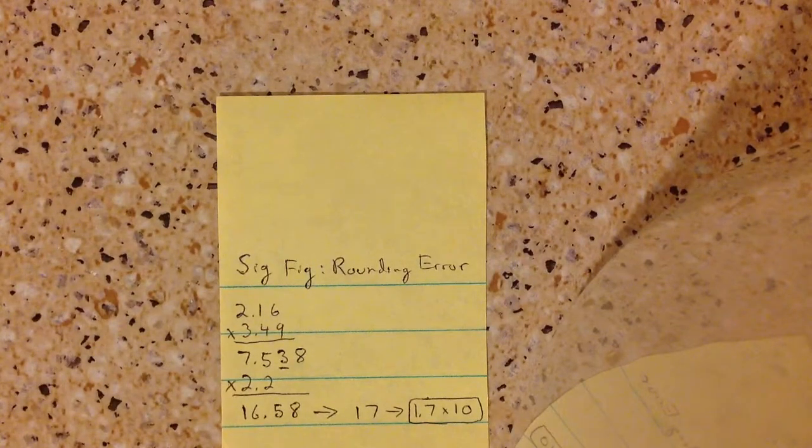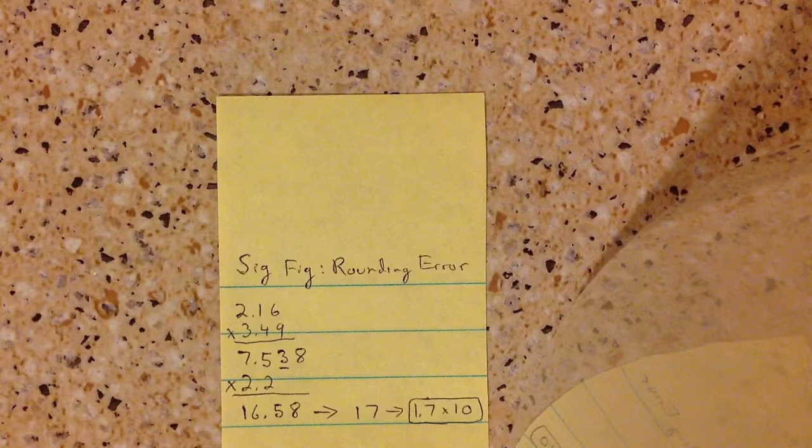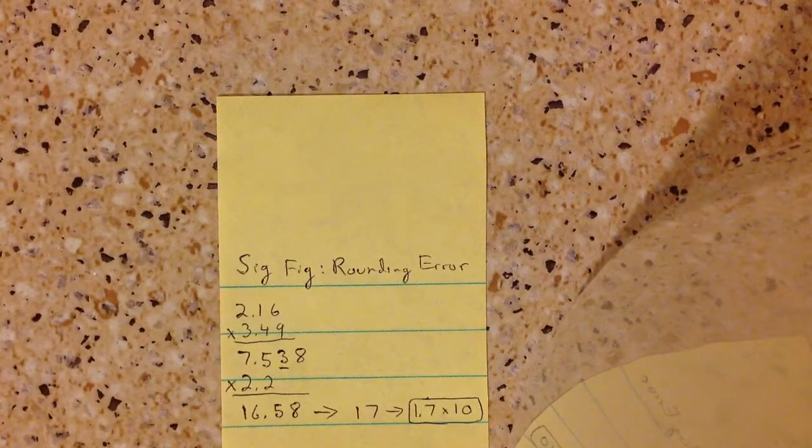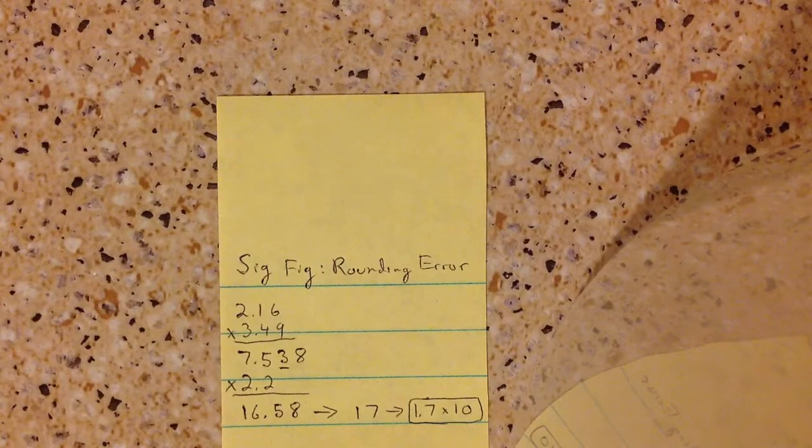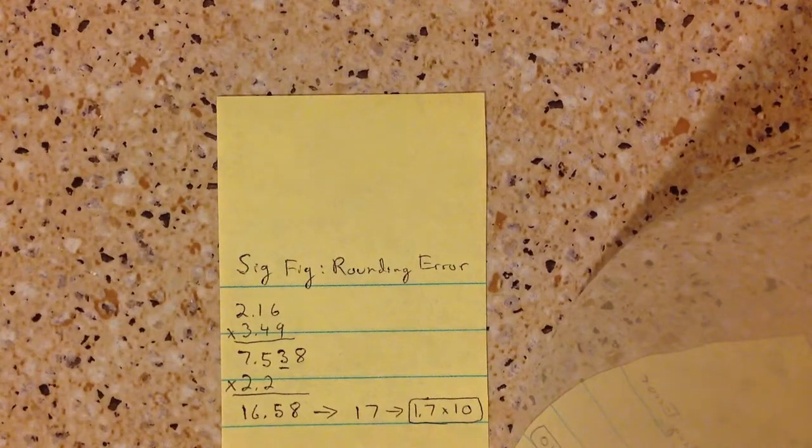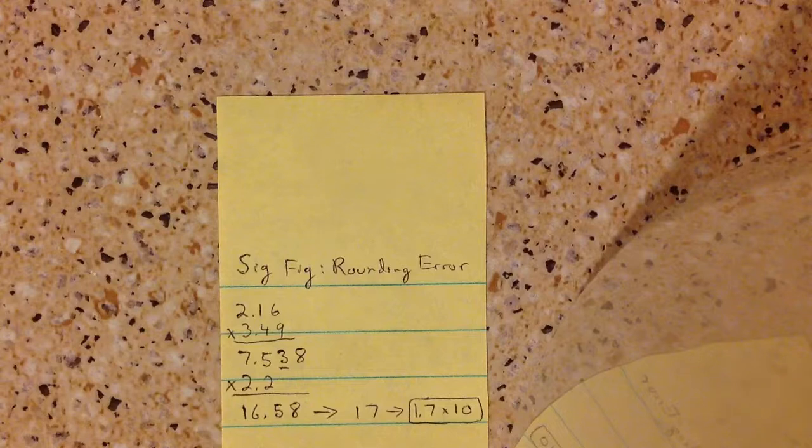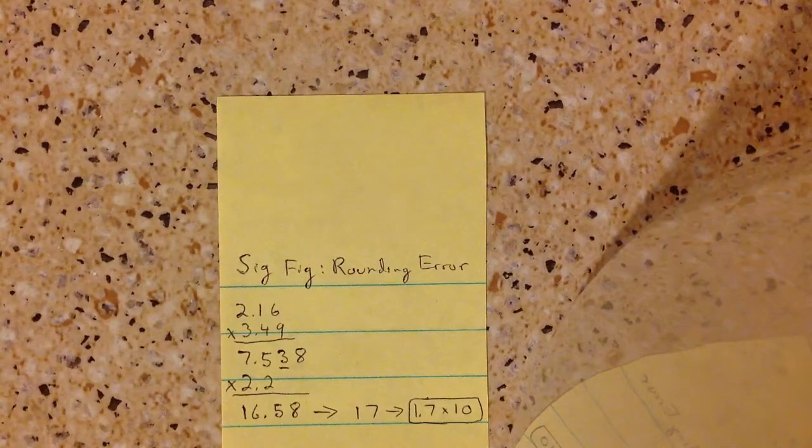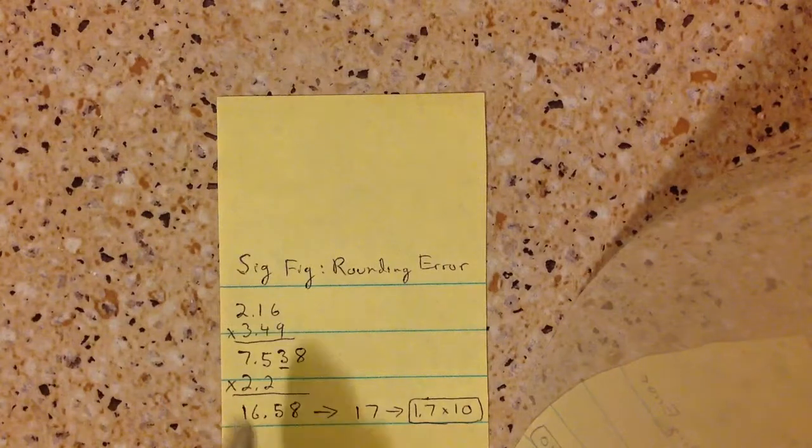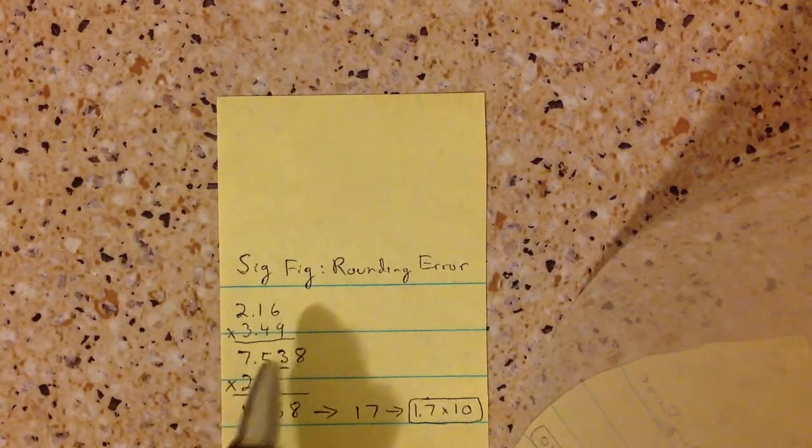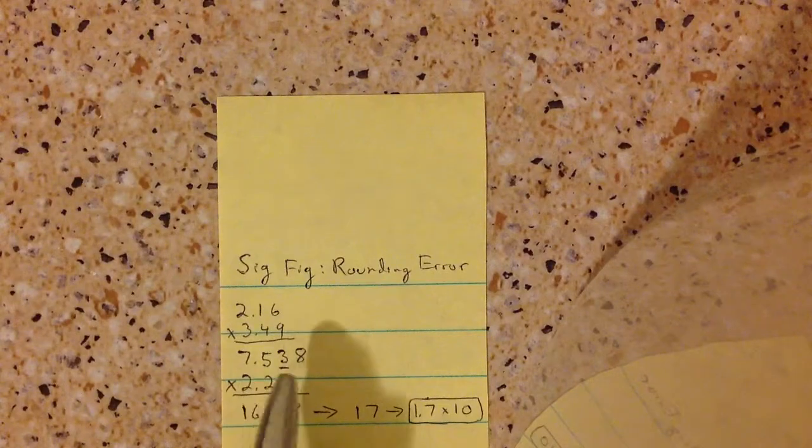So what you have right here is 2.16 times 3.49. Your actual answer is 7.538. In reality, you should have 3 sig figs if that was the only thing you were going to do. So if you only were going to do 2.16 times 3.49, your final answer should be 7.53.